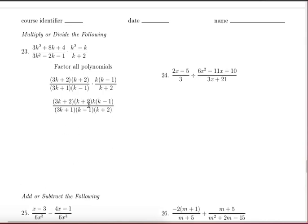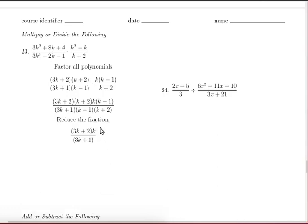Then we have four factors on the top and three factors on the bottom. Notice that this x plus 2 is a factor on the top and on the bottom so they'll cancel. And this x minus 1 is a factor on the top and on the bottom so they will cancel, leaving us with this final result.